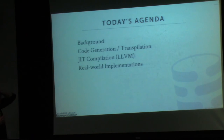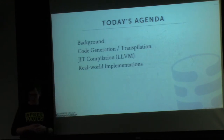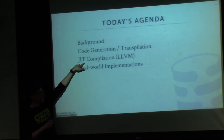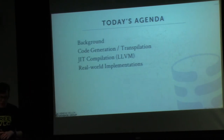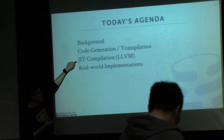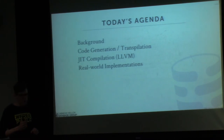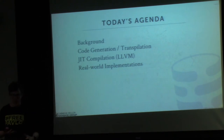We'll start off talking about the background of what code specialization or query compilation looks like, and then we'll look at two techniques. The first is called code generation or transpilation — basically having source code that generates more source code and then you compile it. Then we'll talk about how to do JIT compilation as described in the Hyper paper using LLVM. In my opinion, this is the better way to do it, and this is what we're actually pursuing in our own system today. There are not very many systems that do this — maybe five in the world.